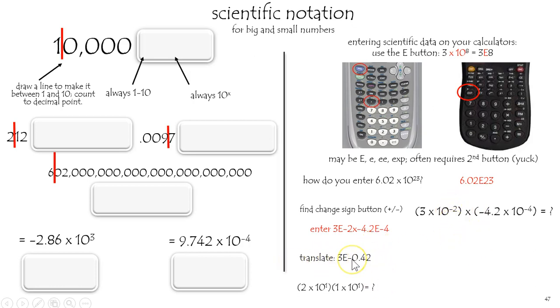Let's translate this. It must mean 3 times 10 to the minus 0.42 power. And by the way, when you punch it in, that's what you get. Some calculators will set up to give you scientific notation. Some will give you a regular number. Either one's the same value.